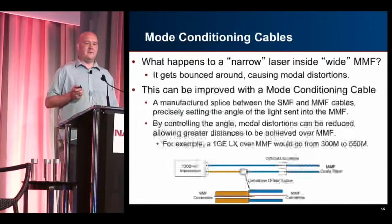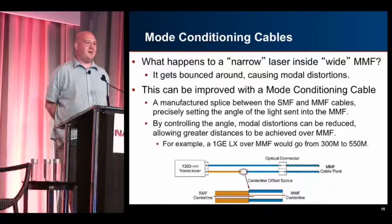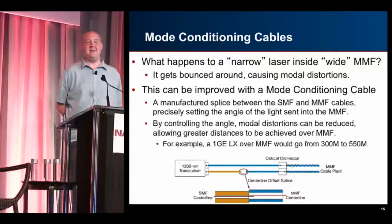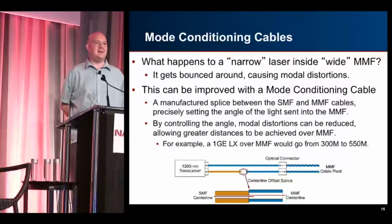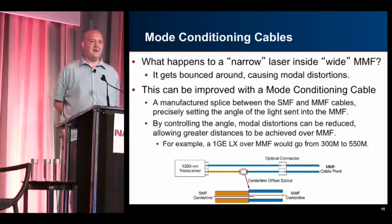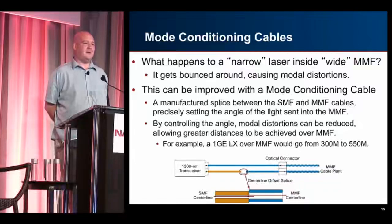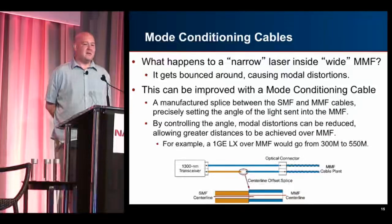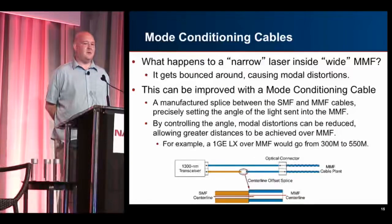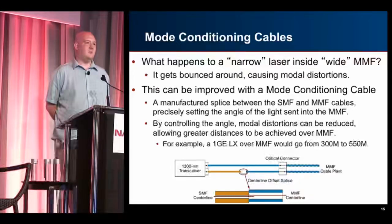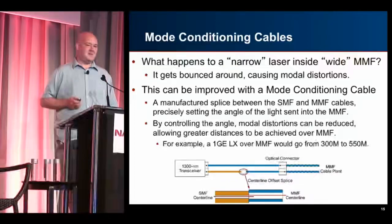There's a thing called a mode conditioning cable. It was mainly a one-gigabit-era solution for when you wanted to use an LX optic on multi-mode and go slightly further. It's a factory-made fusion splice where they set a precise angle between the multi-mode and single-mode fiber so the signal enters at just the right angle to limit modal distortions. This special patch cable might turn your distance from 300 meters to 550 meters. If you ever see a fiber with two mismatched types joined, now you know what it is.